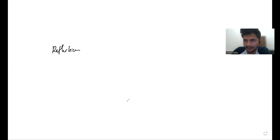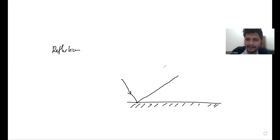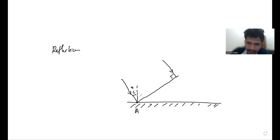First, we will look at the phenomenon of reflection. We consider a plain mirror and a plane wavefront incident on it. There is one ray as part of this plane wavefront, and another ray alongside it. We draw a normal at the point of incidence, which we call point A. This gives us an angle of incidence i, with the complementary angle being 90 minus i.